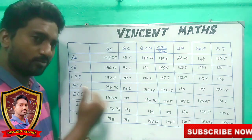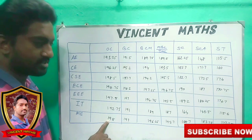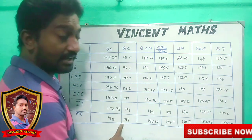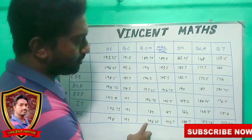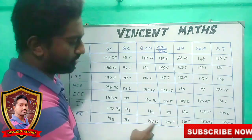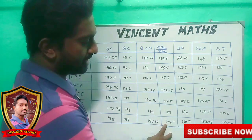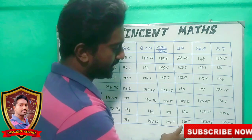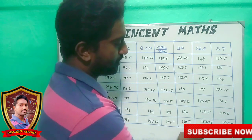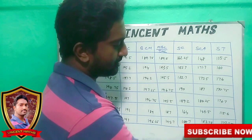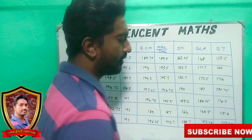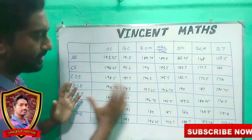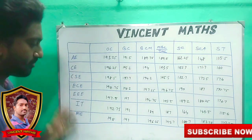Mechanical Engineering — the range is very high. OC is 198, BC is 197, BCM is 197, MBC is 196.25, SC is 195.7, SCA is 188.7, ST is 183.25. The ST is 173.25 and another SCA is 184.25. This is the last year's data for the most popular branches.